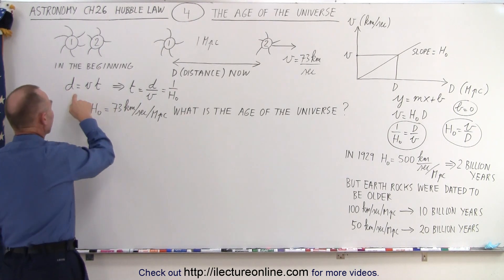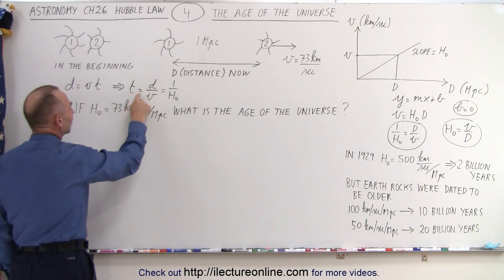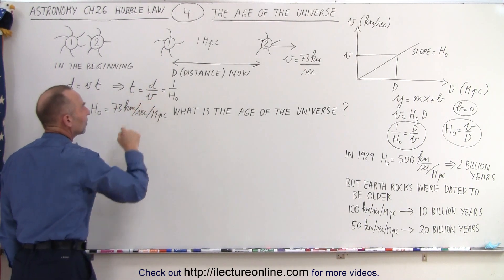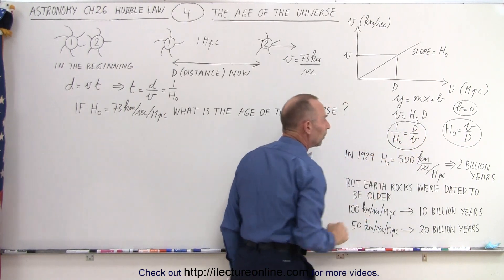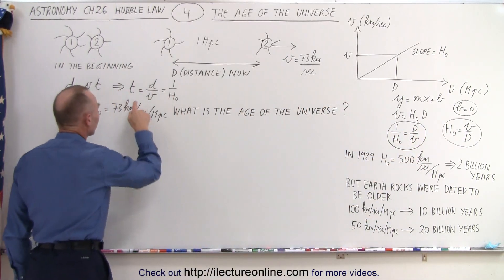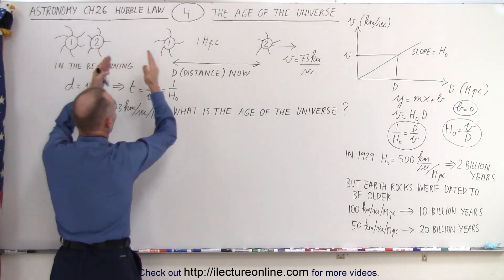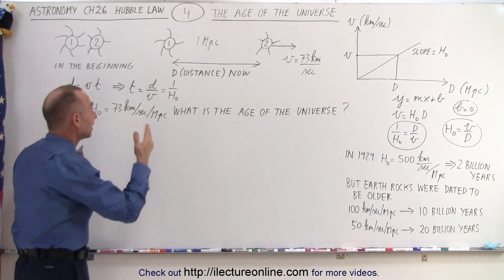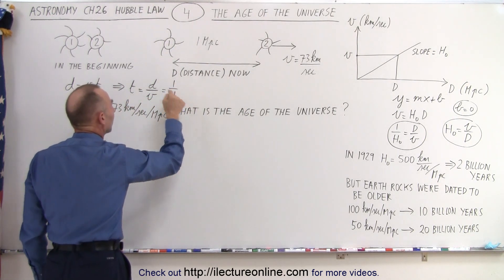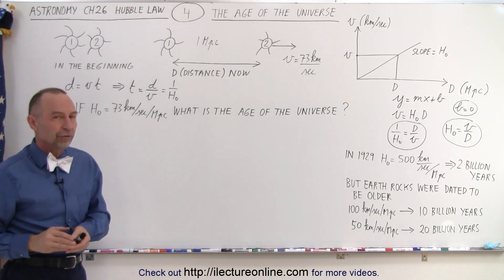So therefore, if we take the equation distance equals velocity times time, and time equals distance over velocity, notice we can solve for distance over velocity, which is equal to one over the Hubble constant. In other words, the time that it took for the galaxy to go from this position to this position, which is equivalent to the age of the universe, must therefore be equal to one over the Hubble constant. And so the inverse of the Hubble constant equates to the age of the universe.